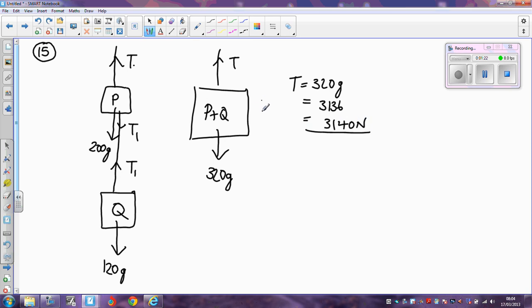If, however, the two are accelerating upwards at 0.4 metres per second squared, that changes slightly and we're going to be using Newton's second law in an upward direction. Acting upwards, we've got T. Acting against T, we've got the 320g weight, and that will equal the mass, 320, times the acceleration, which is 0.4.